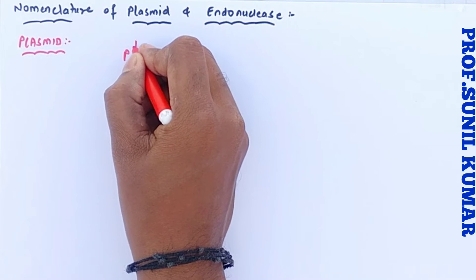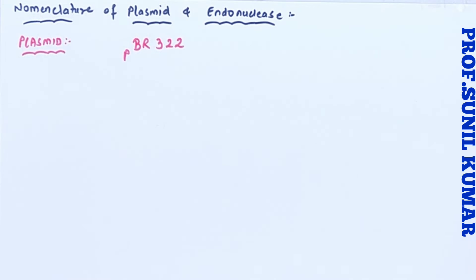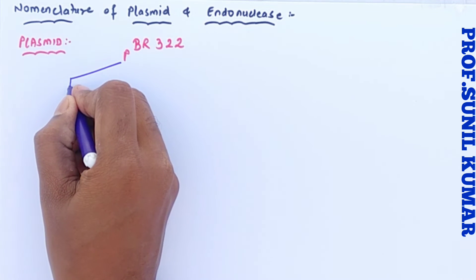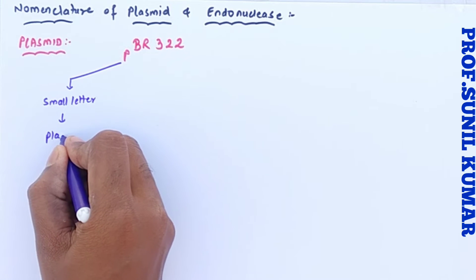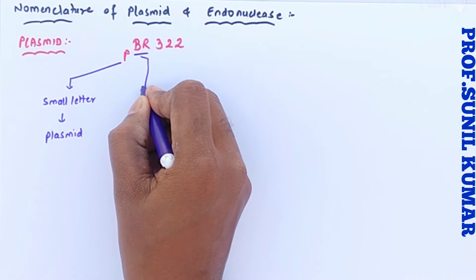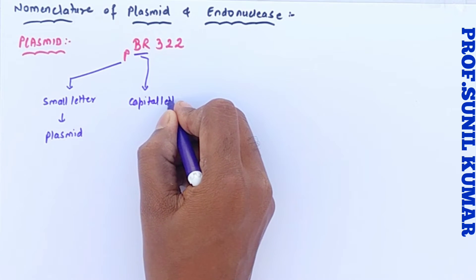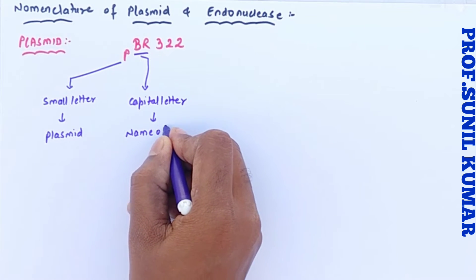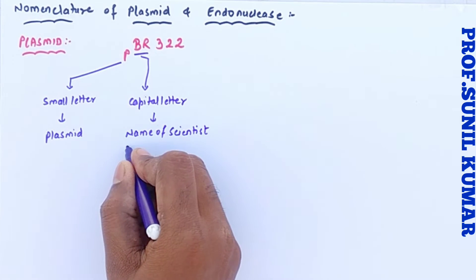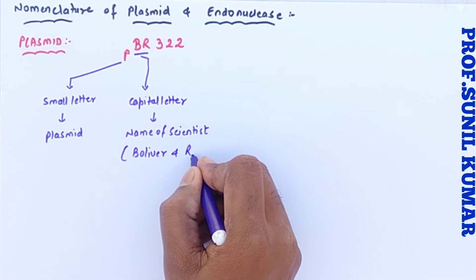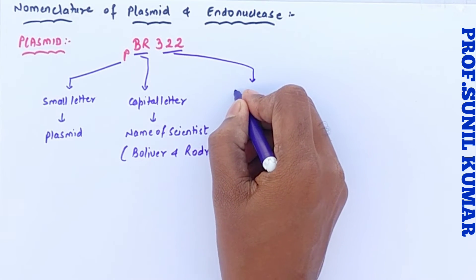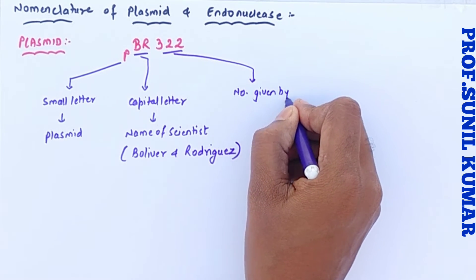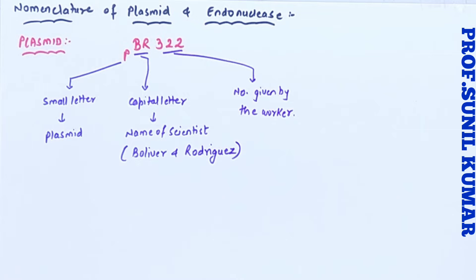Let's take one example: pBR322. When you look at 'p', it is written in small alphabet — that means it's a plasmid. 'B' and 'R' are in capital letters, which indicates the name of the scientists — that is Bolivar and Roderick's. When we talk about 322, it's a number decided by the worker. So pBR322 is one of the plasmids.